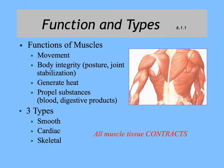We're going to start with function. I know we always say structure and function, but we talk about it function and structure. Your muscles have several important functions. We tend to think about muscles in terms of movement, but muscles are also important for body integrity — they help maintain our posture through muscle tone and provide joint stabilization. As muscles contract, they generate heat, which is useful in maintaining thermoregulation, keeping our body temperature at the correct level for all of our enzymes and other chemicals to work.